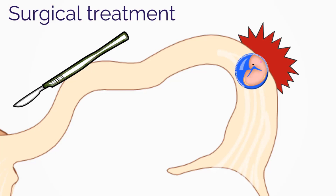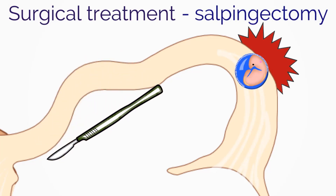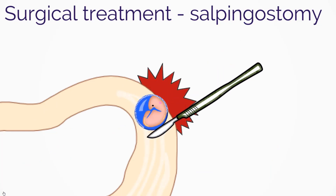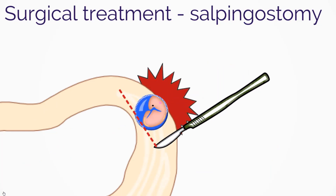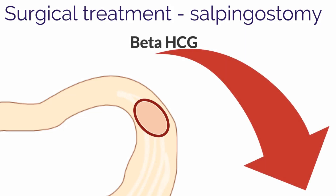Alternatively, if women are not candidates for medical management, such as with suspicion for ruptured ectopic, surgical options include salpingectomy — removal of the entire tube — versus salpingostomy, which involves making a small hole in the fallopian tube and removing the pregnancy itself. Similar to methotrexate administration, beta-HCG levels must be trended to ensure that the entire ectopic pregnancy has been removed.